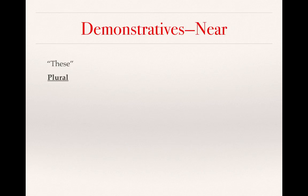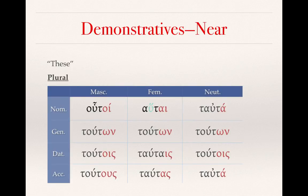We see similar patterns with near demonstratives in the plural. Again, the distinguishing characteristic for the feminine nominative is the rough breathing with the accent over the upsilon. Those red endings indicate the patterns we've begun to see, especially with the definite articles. The toutoi and hautai are indicators of the plural near demonstratives in the nominative, masculine and feminine, respectively.